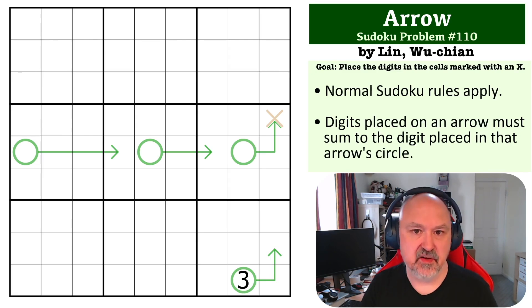And again, thank you Wuchen for all of the problems you've submitted. So the goal on this one is to place the digit in the cell marked with an X, and this is an arrow one. So the digits that are placed on the arrow must sum to the digit that is in the arrow circle.